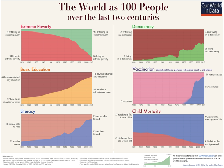Research from Our World in Data is used in many ways. The website is used widely in the media. Newspapers like The Washington Post and The New York Times regularly cite Our World in Data as a source. Tina Rosenberg emphasized in The New York Times that Our World in Data presents a big picture that's an important counterpoint to the constant barrage of negative world news.